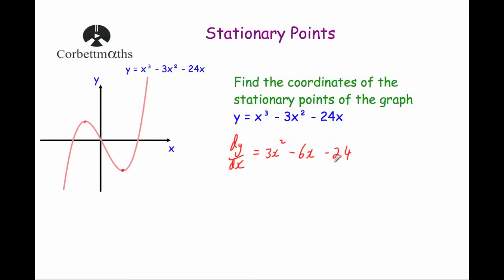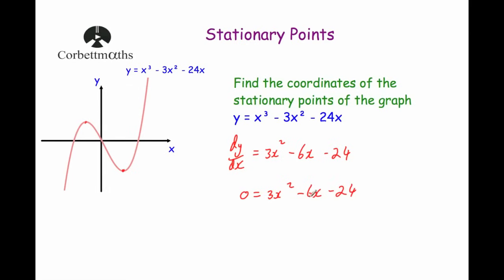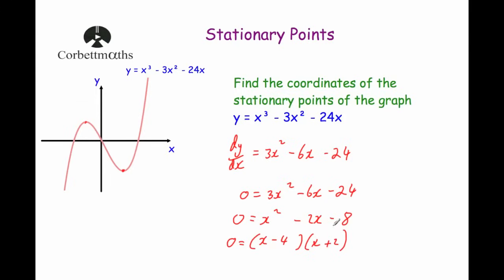We know the gradient is equal to zero at both turning points, so dy/dx equals zero: 0 equals 3x squared minus 6x minus 24. The right-hand side can all be divided by 3, giving 0 equals x squared minus 2x minus 8. Factorizing: 0 equals (x − 4)(x + 2), checking: minus 4 times 2 is minus 8 and −4 + 2 = −2. So x equals 4 or x equals negative 2.